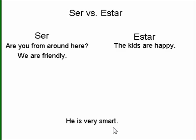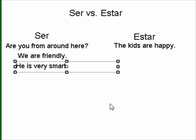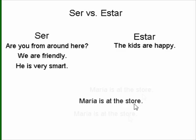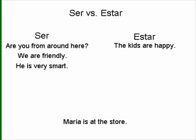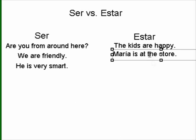He is very smart — take a minute to think about it. That's a characteristic or an attribute, so we would put that in the ser column. Maria is at the store — that's giving us Maria's location. We use estar for location.